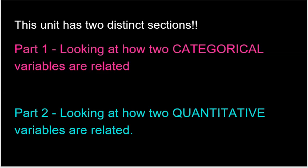This unit is divided into two distinct sections. In the first couple of topics, we're going to look at how two categorical variables are related. Then we'll move on to how two quantitative variables are related. We keep them separate because, just like bar graphs are for categorical data and histograms are for quantitative data, categorical and quantitative variables are very different types, so how we look at relationships between them needs to be kept separate.